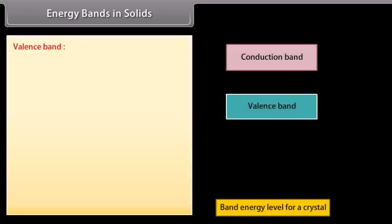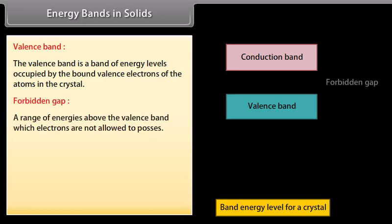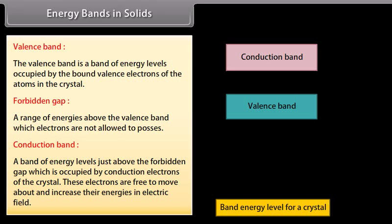The valence band is a band of energy levels occupied by the bond-valence electrons of the atoms in the crystal. The forbidden gap is a range of energies above the valence band which electrons are not allowed to possess. The conduction band is a band of energy levels just above the forbidden gap, occupied by conduction electrons of the crystal. These electrons are free to move about and increase their energies in an electric field.